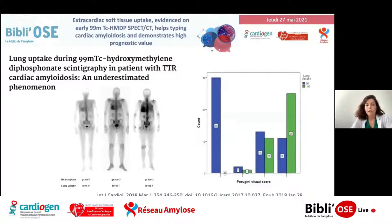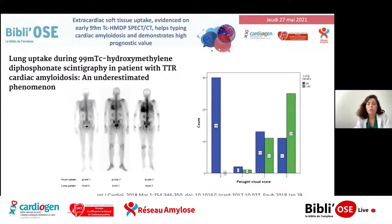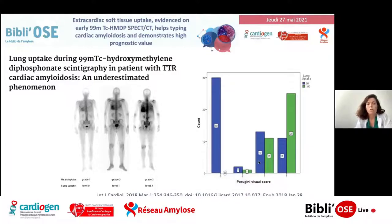Les fixations extracardiaques sur ces scintigraphies osseuses ont été décrites dans un papier initialement publié en 2018, qui s'est principalement intéressé à la fixation pulmonaire. On voit que chez les sujets contrôle, il n'y a aucune fixation pulmonaire. Avec le score de Pérugini A2 puis A3, on a une augmentation du pourcentage de patients avec une fixation pulmonaire chez les patients atteints d'amylose à transthyrétine.